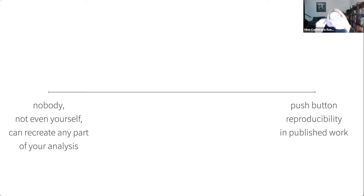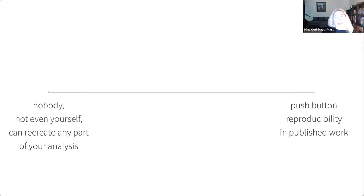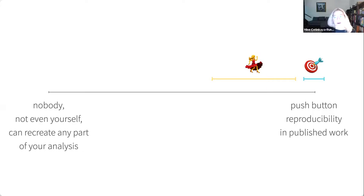What we really mean is that we need to start thinking about a reproducible framework, as opposed to trying to make our work reproducible at the end of our project. If this is the reproducibility spectrum — where on one hand nobody, not even yourself, can recreate any part of your analysis, and on the other hand you have that gold standard push-button reproducibility in published work — this is obviously what you want to aim for. But the goal I want to communicate today is that maybe just try to get close to it. Don't let the perfect stop you from trying to get closer.